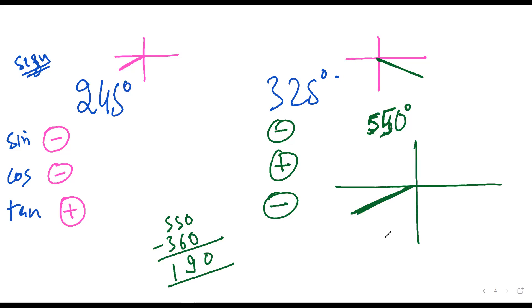In third quadrant, which is positive? Tan is positive. So only tan would be positive; sin and cos would be negative. And of course, this implies that cot would also be positive, and secant and cosecant would also be negative.